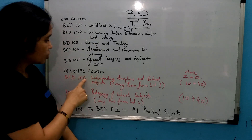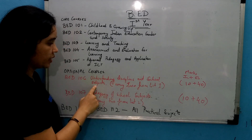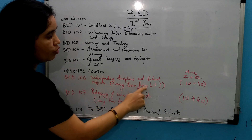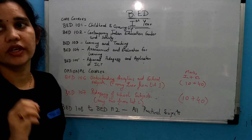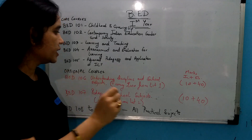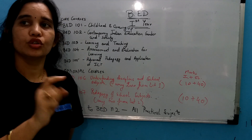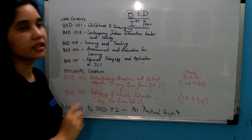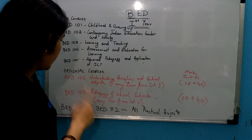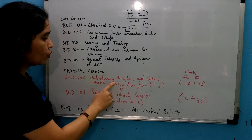B.Ed.106 is Understanding Disciplines and School Subjects. In this case, you select any two from a list provided by the university. You can select from 1 to 12 subjects, and choose one subject for B.Ed.106. Similarly, you can select two subjects for B.Ed.107.